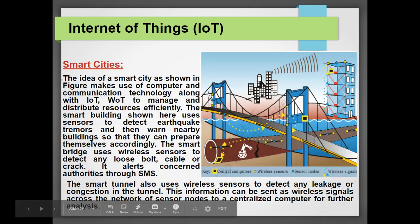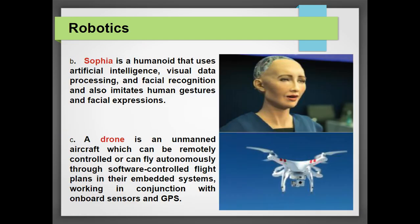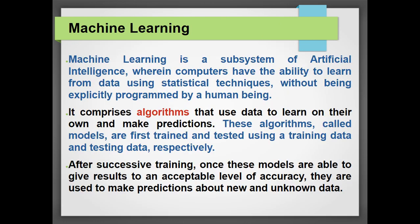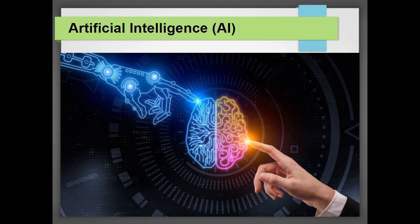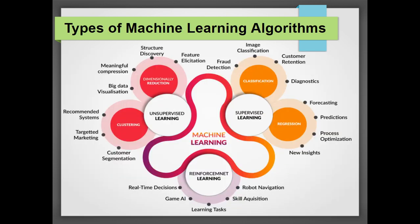In the previous class, we introduced and discussed artificial intelligence. Then we understood what exactly is machine learning, which is a subsystem of artificial intelligence, where computers have the ability to learn from data that has already been given by human beings — that is our coding only.